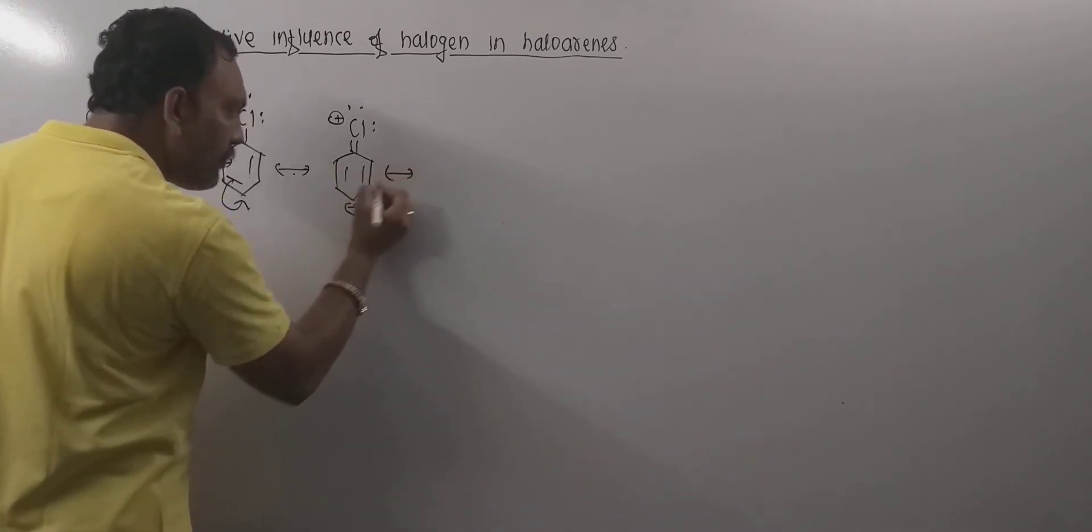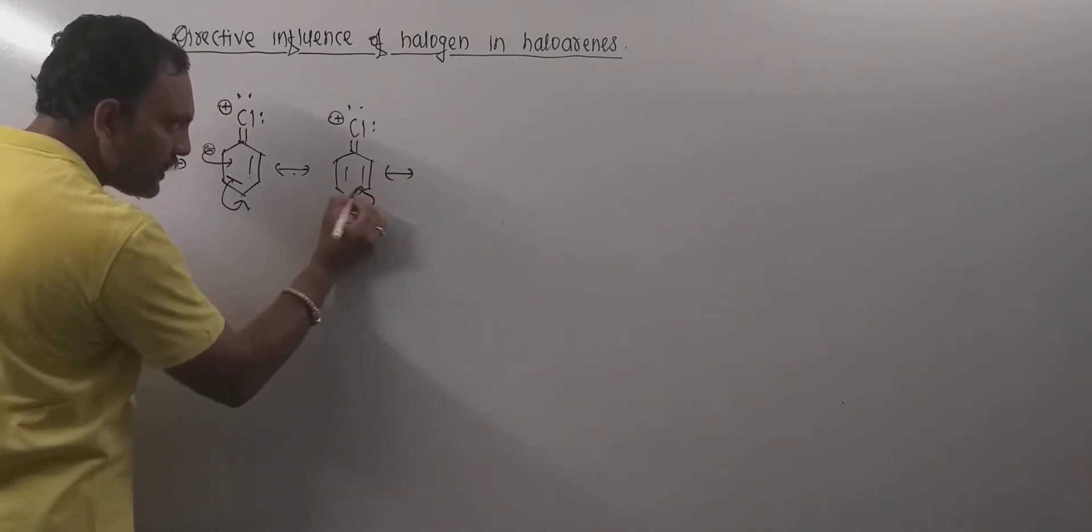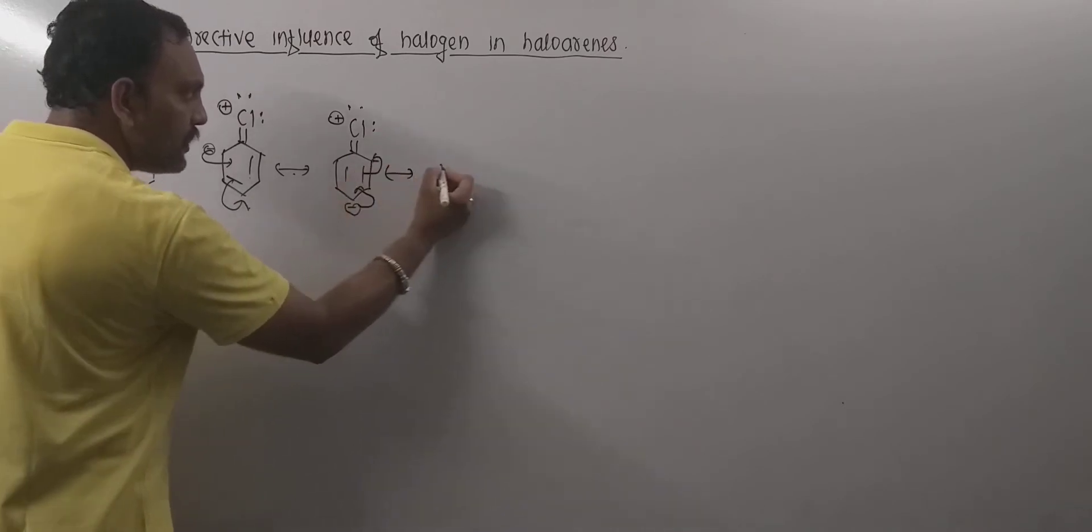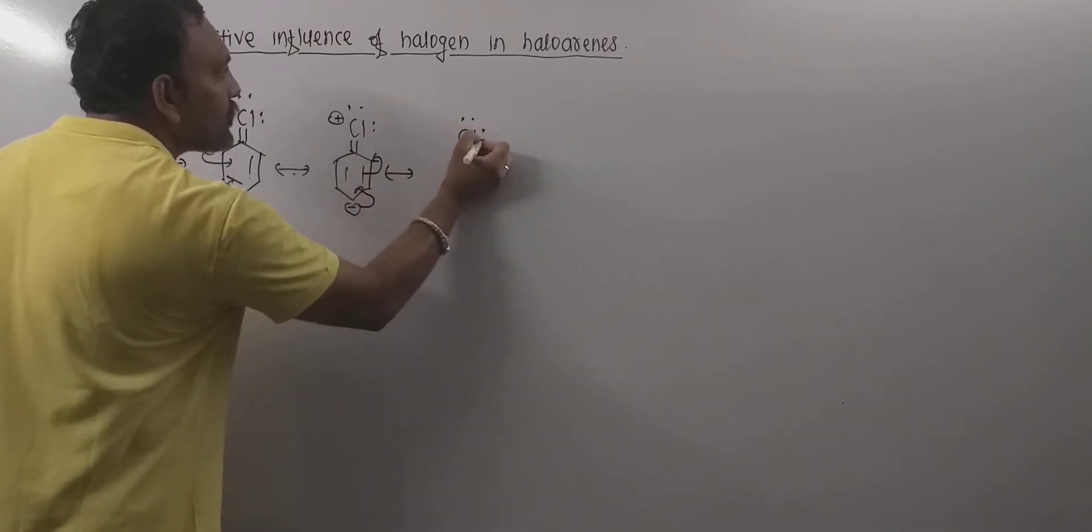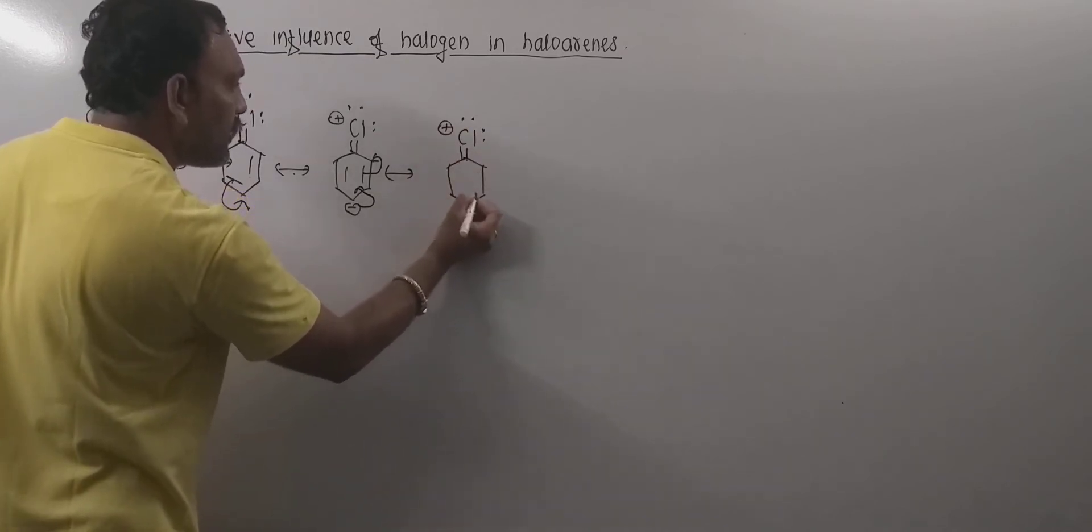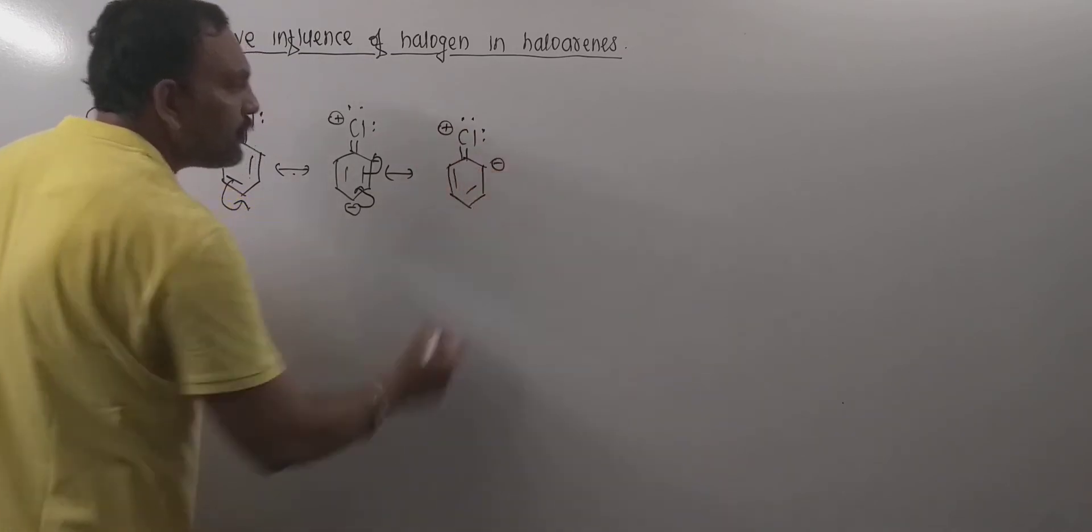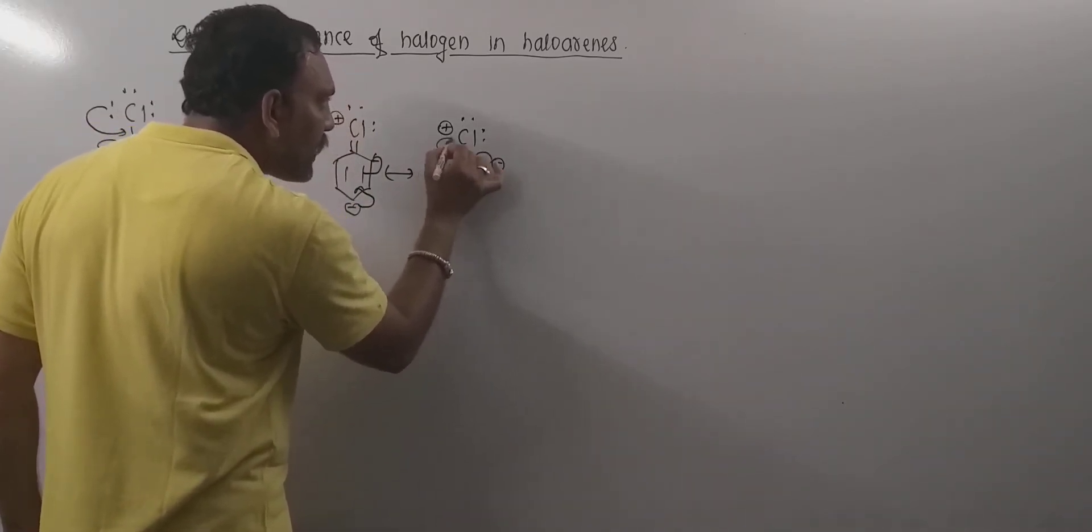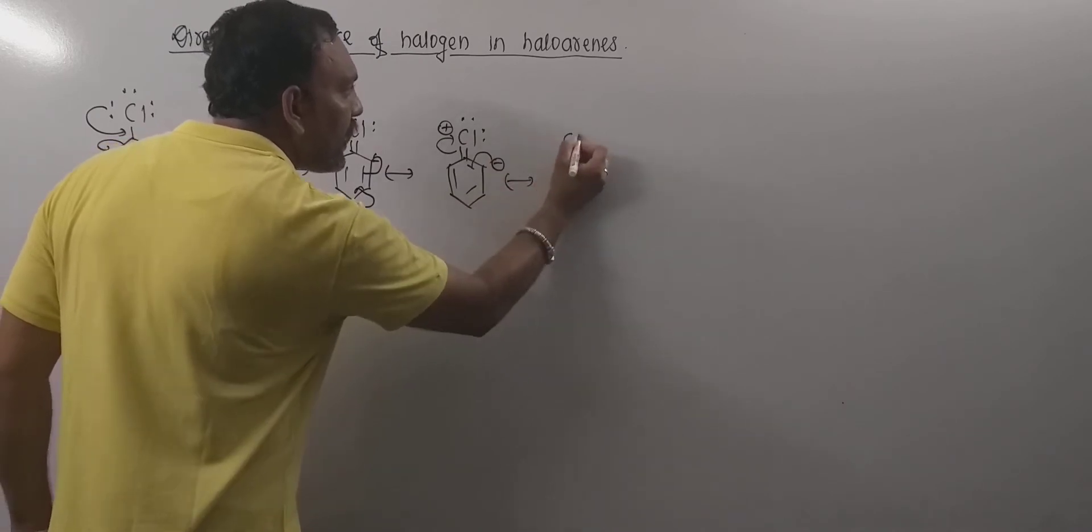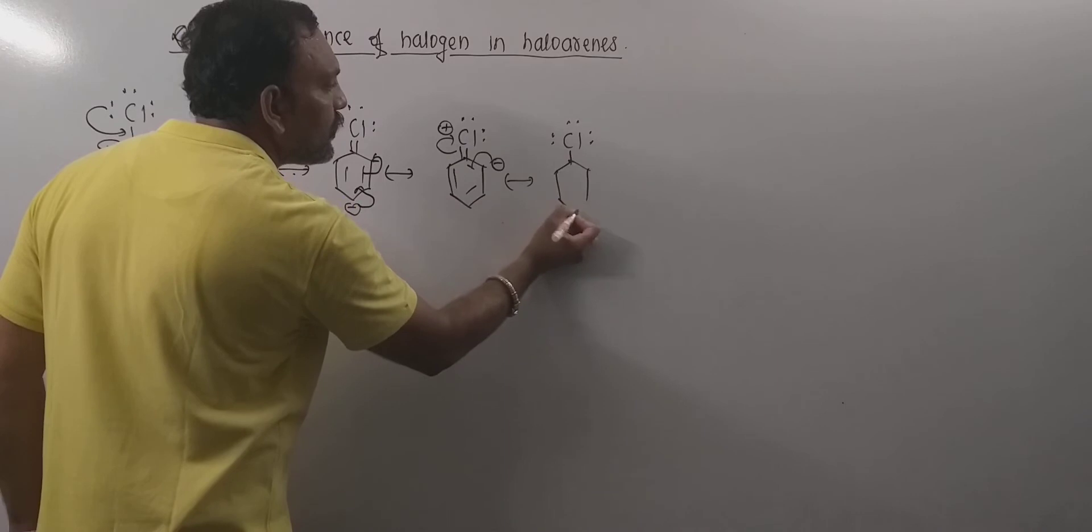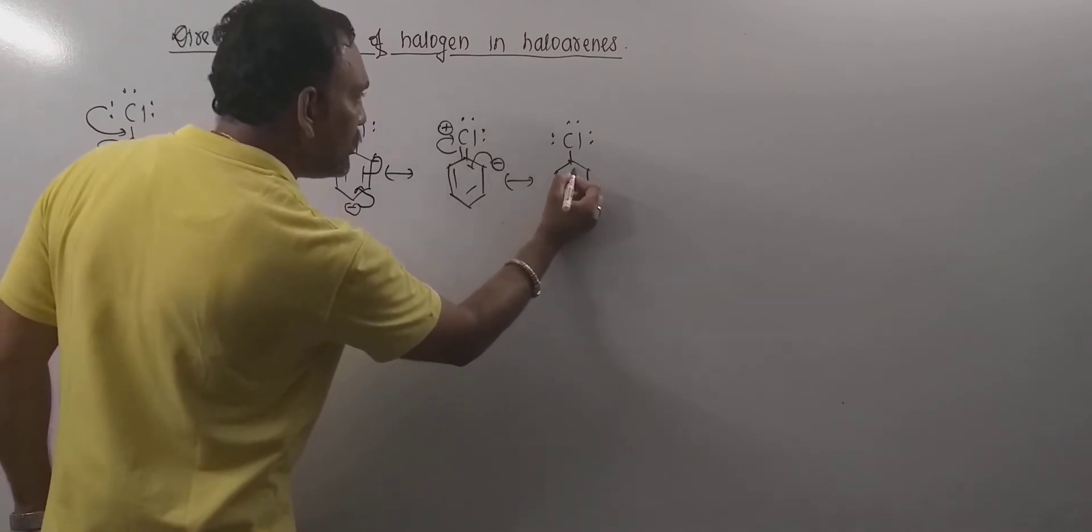Now this carbon tends to get stable. It shares electron pair in this way and thus another resonating structure comes and that resonating structure can be drawn in this way. And finally what happens, this carbon shares electrons like this and the final resonating structure for this will be like this.